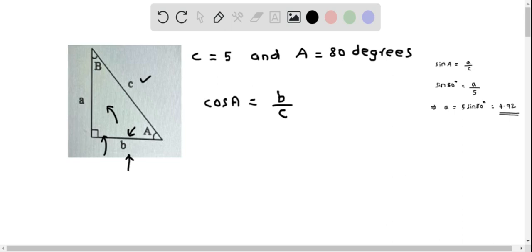So let me substitute the angle A, which is 80 degrees. So therefore this becomes cos of 80 degrees. And this equals B over C is 5. So we multiply both sides by 5, so that we get the value of B equals 5 times cos 80.